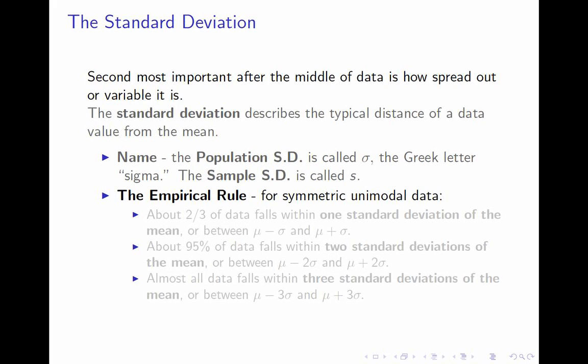The most important thing about the standard deviation is the empirical rule. The empirical rule describes what the standard deviation tells you in a useful heuristic way. It has three versions. This is a rough rule of thumb — it works very well if your data is symmetric and unimodal, meaning bell-shaped, and it works reasonably well if your data is not too far off from that. If it's highly skewed, this won't tell you much.